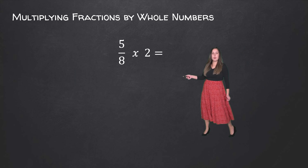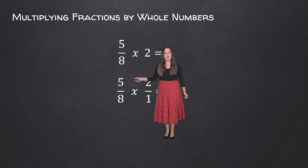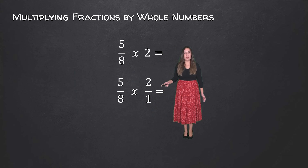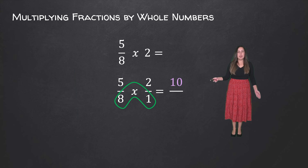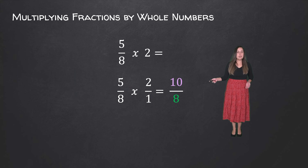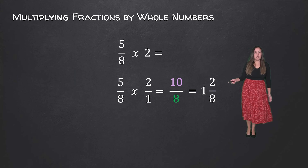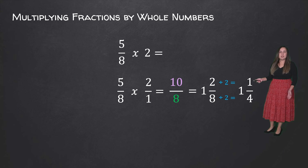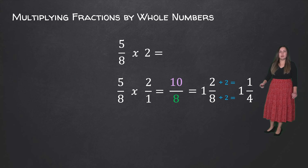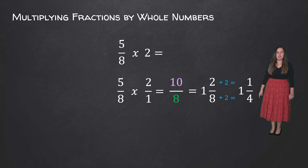If we didn't have our model, we would rewrite the fraction and write 2 in fraction form as 2 over 1. Then we multiply our numerators: 5 times 2 is equal to 10, and multiply our denominators: 8 times 1 is equal to 8. So we have 10 over 8, an improper fraction that can be written as 1 and 2 eighths, which simplifies by dividing numerator and denominator by 2, giving us 1 and 1 fourth. So 5 over 8 times 2 equals 1 and 1 fourth — and that's it for multiplying fractions by whole numbers.